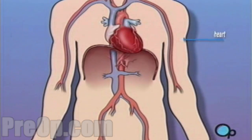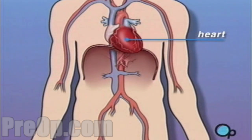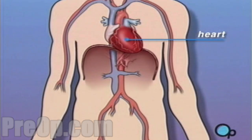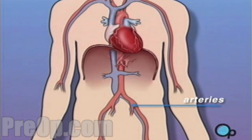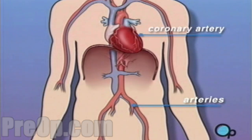The heart is located in the center of the chest. Its job is to keep blood continually circulating throughout the body. The blood vessels that supply the body with oxygen-rich blood are called arteries. The arteries that supply blood to the heart muscle itself are called coronary arteries.